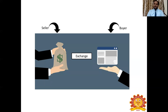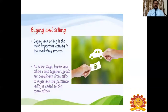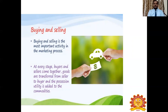Buying and selling combined are called exchange functions, where buyer and seller are involved. The buyer will be the consumer, and sometimes may be a retailer or wholesaler. The seller is not necessarily a farmer — he may be a wholesaler or retailer. Buying and selling is the most important activity in the marketing process. At every stage, buyers and sellers come together; goods are transferred from seller to buyer and possession utility is added to the commodities. Possession is who possesses the commodity. When the product is possessed by the seller, its usage to society is relatively lower, but when transferred to a buyer or consumer, the usage increases — representing the added possession utility.